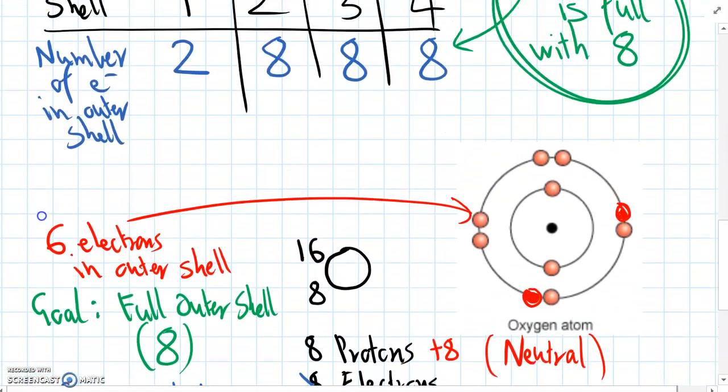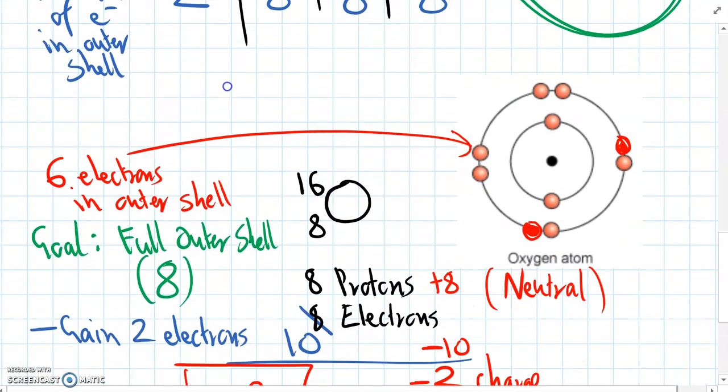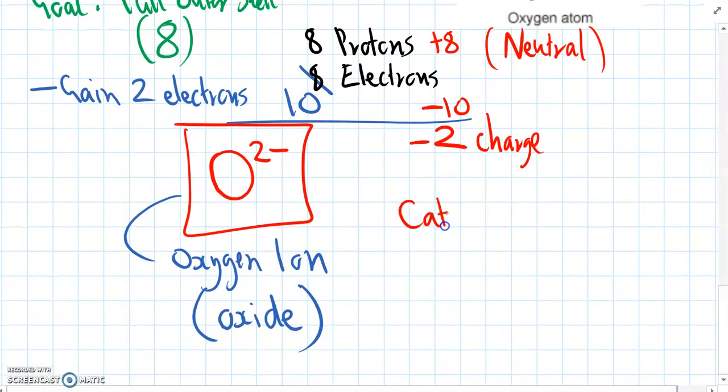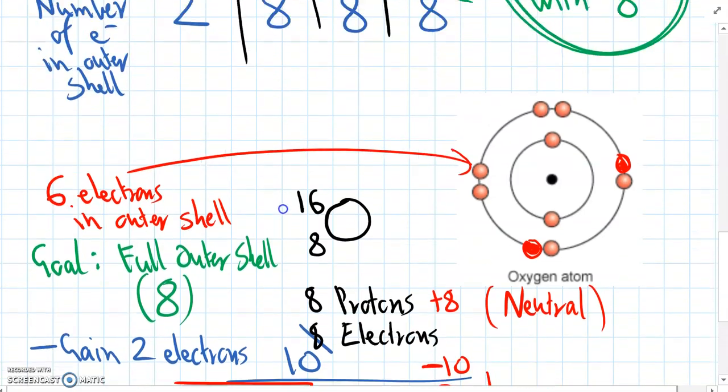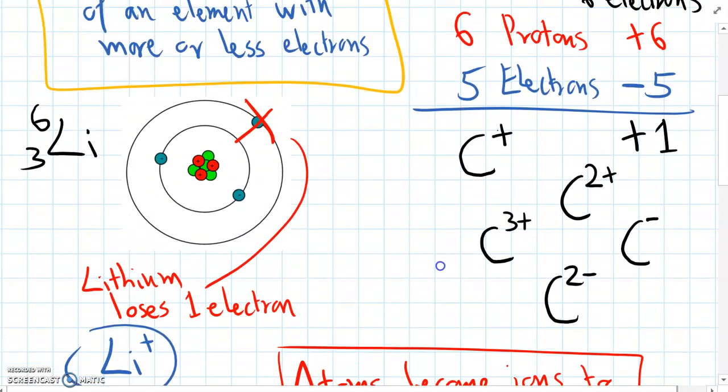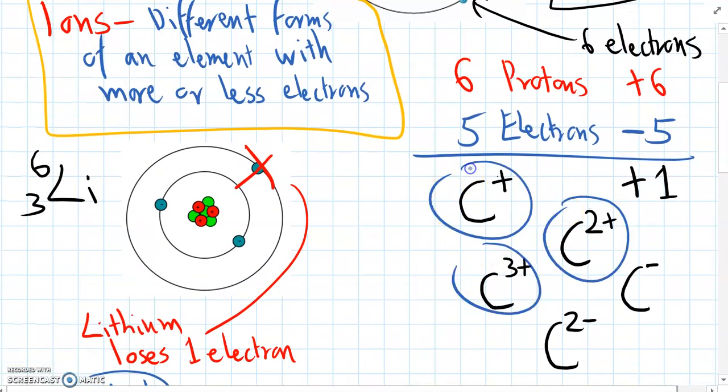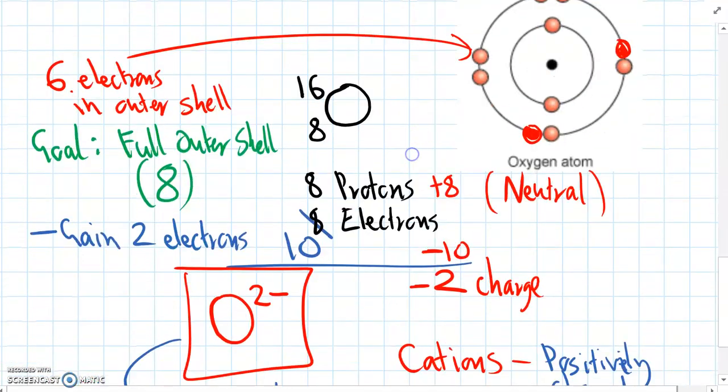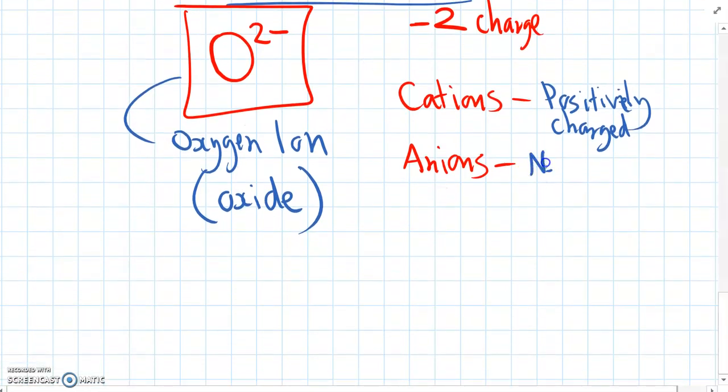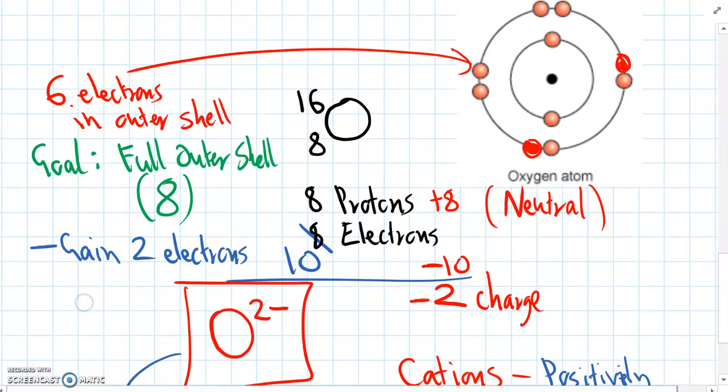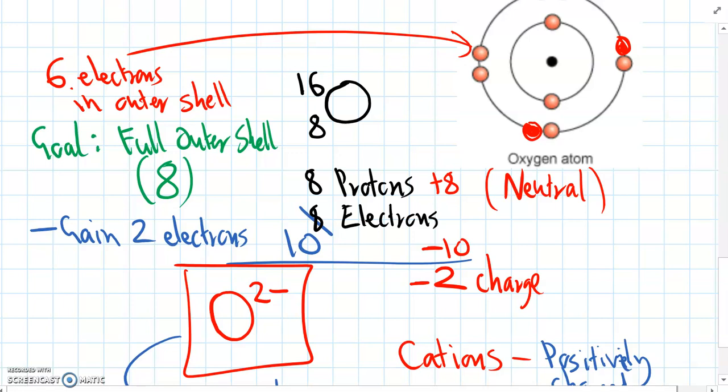So there's only two more words to define to do with ions. And these are cations and anions. Cations, nothing to do with cats or fur. These are just positively charged ions. So the ions that we saw before, we had lithium, that's a cation. And this carbon, all these carbons that are positively charged, we call those cations. So atoms try to get a full outer shell by gaining or losing electrons, and we call these ions.